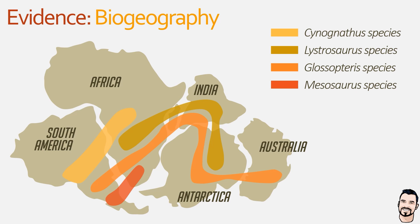So why is this important? It is extremely unlikely that the exact same fossils — and therefore the exact same species — would have evolved independently on each of these continents. The only reasonable hypothesis for this distribution is that the continents were at one point connected, and as they separated, independent evolution took place.